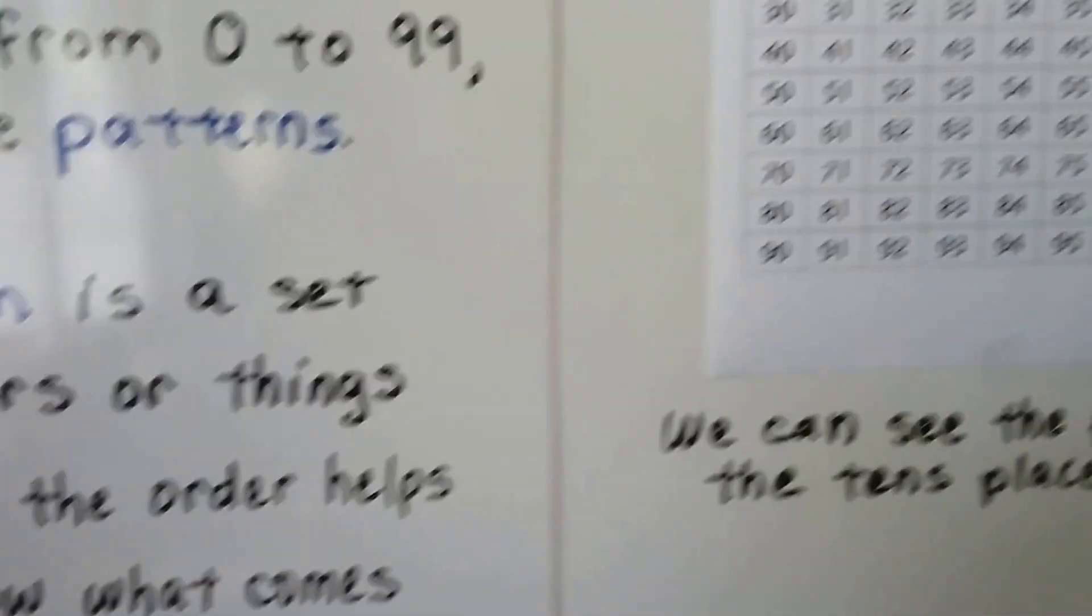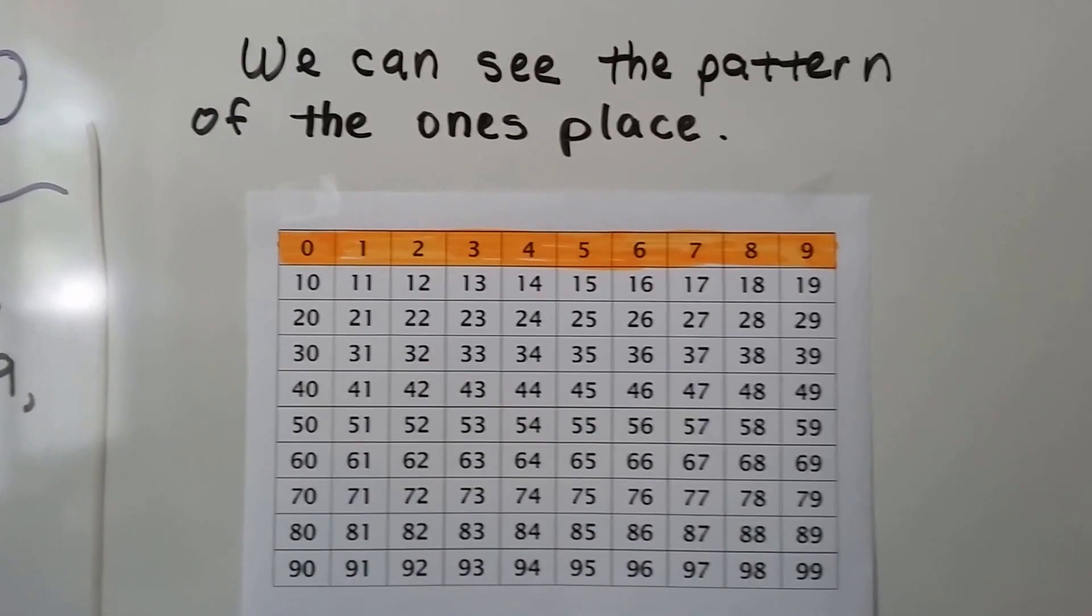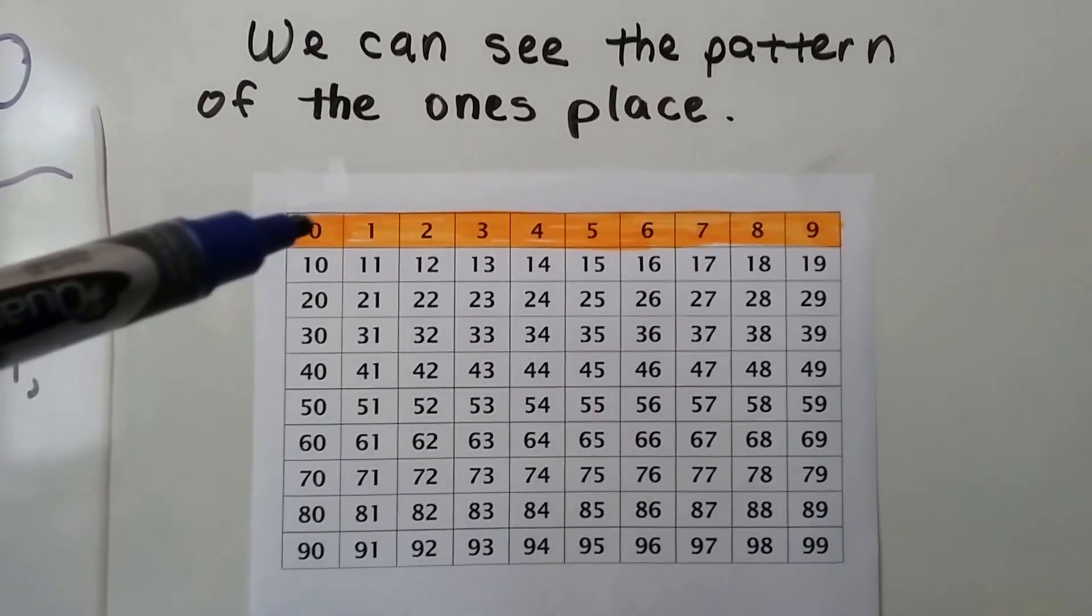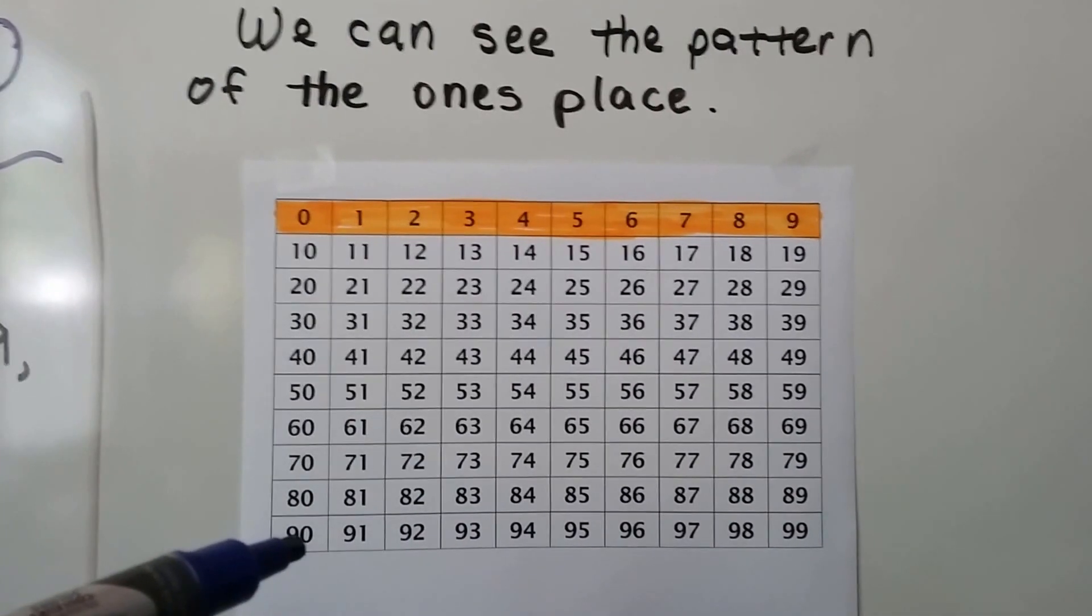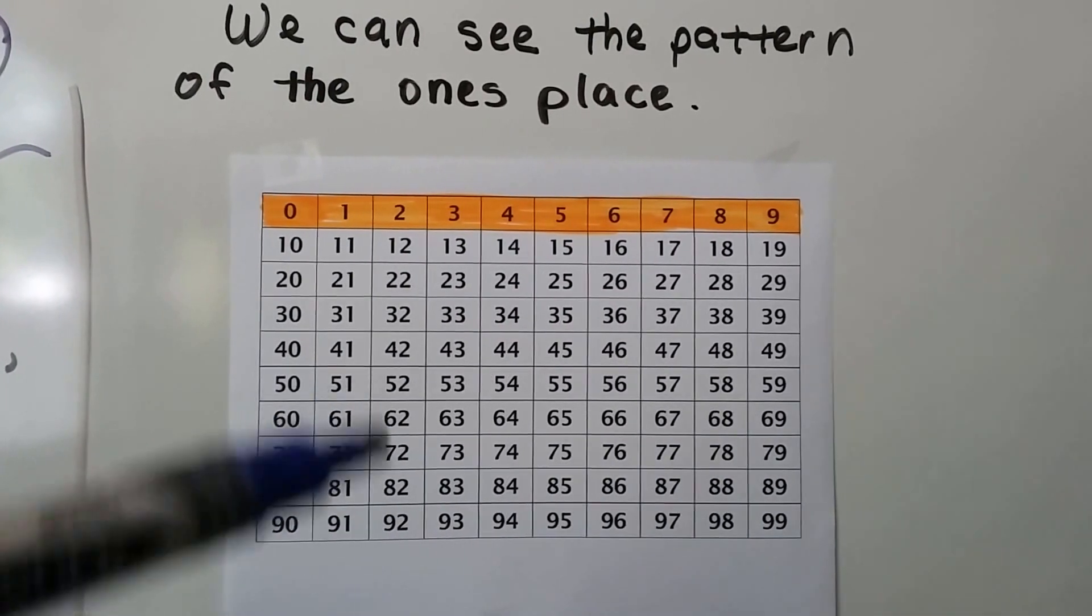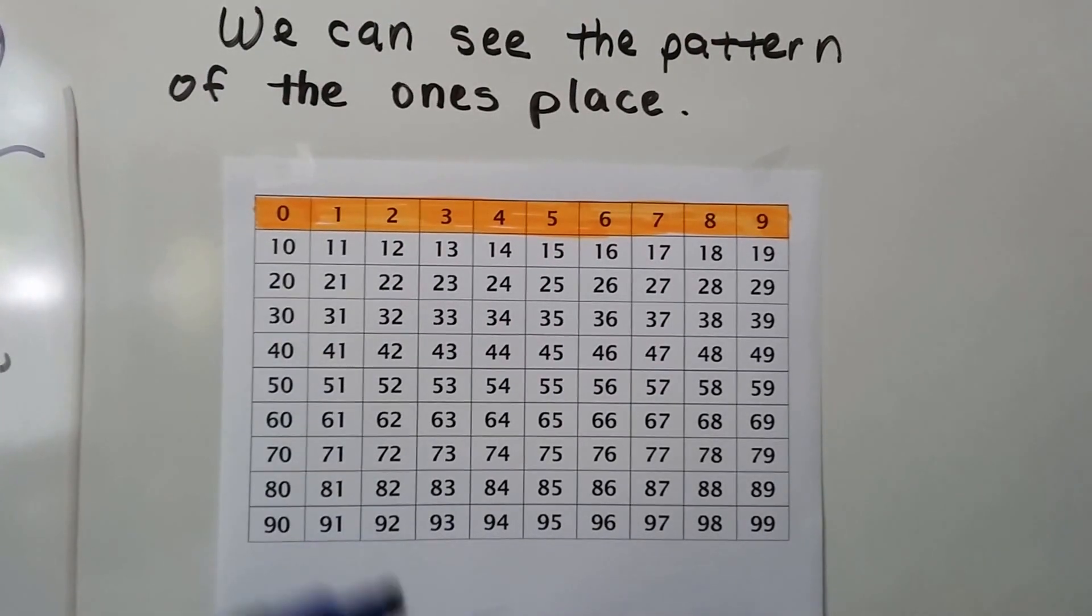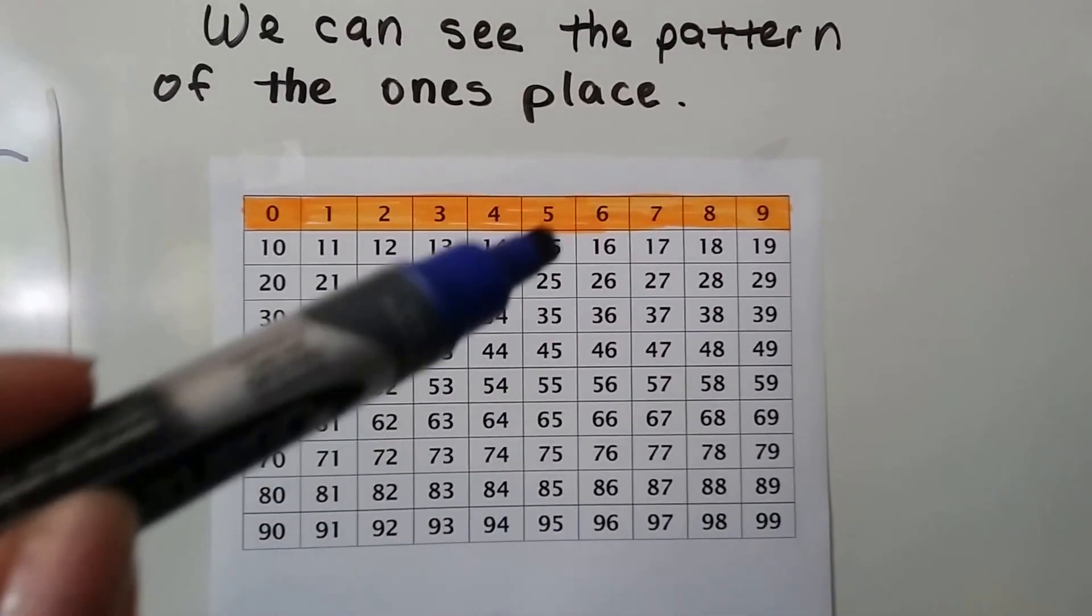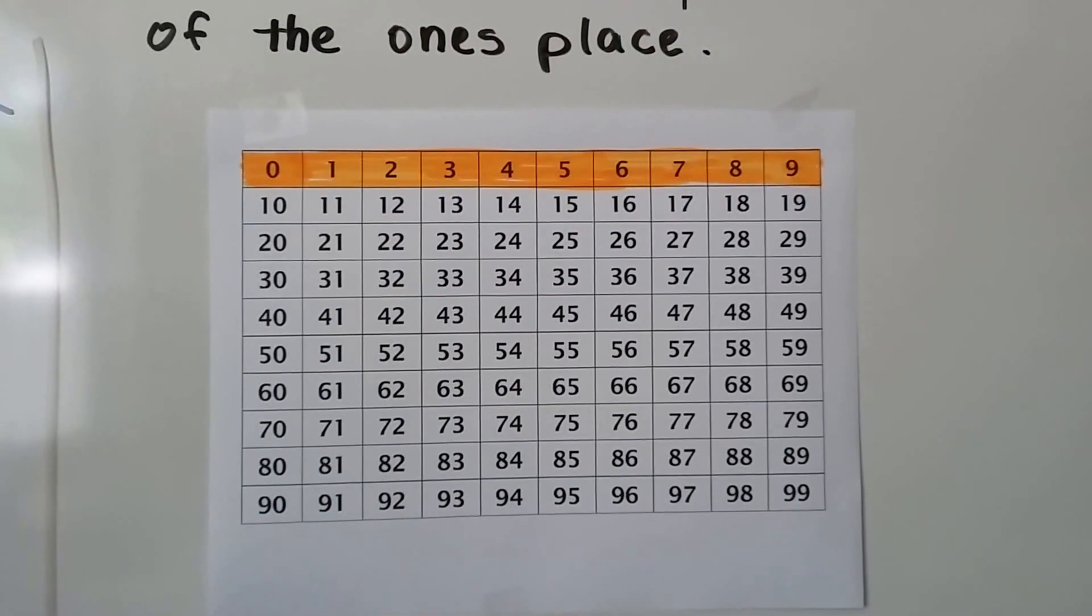We can see the pattern of the ones place. We're starting with 0 and we can see all the ones in orange across the top. All the numbers below the 0 have a 0 in the ones place. All the numbers below the 1 have a 1 in the ones place. All the 2s have a 2 in the ones place. And each number does that coming down. All the 5s, all the 6s, all the 7s in the ones place.